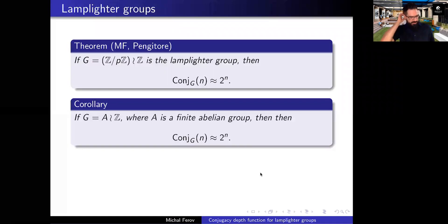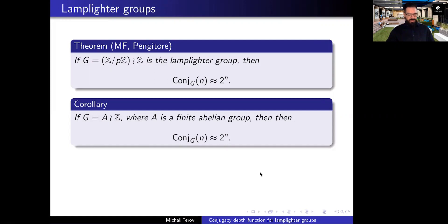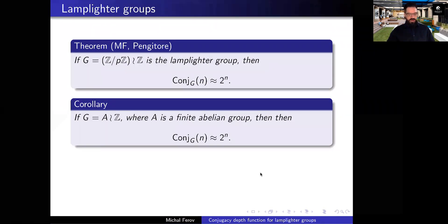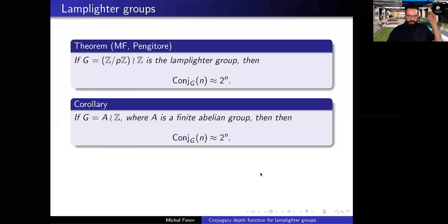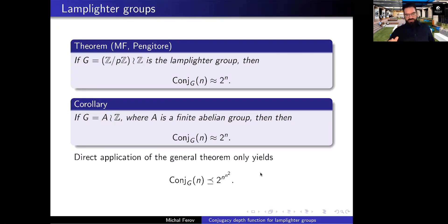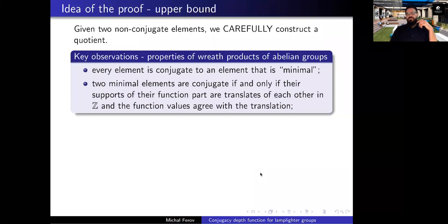However, if you just take the lamplighter group, and by lamplighter group I mean that we have the simple cyclic group and it's wreathed with the infinite cyclic group, then actually the conjugacy depth function is exponential. And that is, well, I don't know to which extent it is a great result, probably nothing groundbreaking. However, getting the upper bound is not too difficult I would say, but the lower bounds are quite tricky and I will explain why.